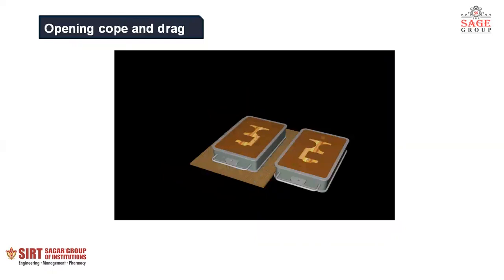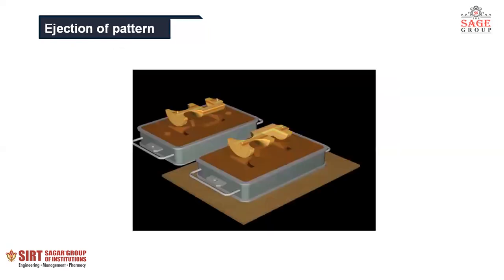Then after ramming and packing, the cope and drag boxes are opened to eject out the pattern so that the cavity is formed. After ejection of the pattern, a cavity is left over in which the molten metal will be placed.